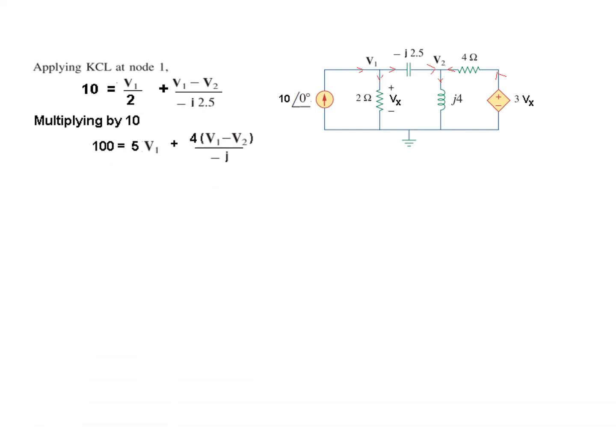We will simplify this so I'm multiplying it by 10 which is the LCM of 2 and 2.5, or you can take any value that is convenient. You could have taken 5 but I think 10 is easier so I'm multiplying it by 10 so this will be 100, this will be 5 V1 and this will be 10 divided by 2.5 it will be 4 V1 V2 and then at the denominator we'll have minus j.